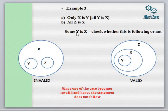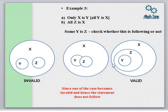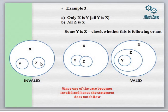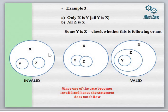We have to check whether Some Y is Z follows or not. There are three possible cases. In the first case, All Y is X with Y and Z as separate circles both inside X — Some Y is Z does not follow. In the second case, All Y is X and All Z is X such that Z and Y also have some portion in common — Some Y is Z does follow. The third case similarly allows Y and Z to overlap inside X, making Some Y is Z valid there too.